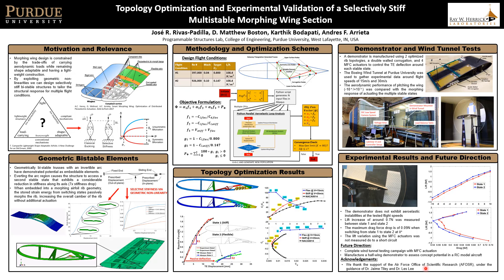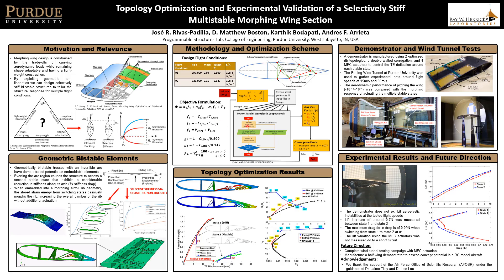This morphing rib topology may be used in the construction of a morphing wing with multiple stable states and capability to discretely change the global stiffness of the wing depending on the flight maneuver. In this work, we have considered two distinct flight conditions based on current UAV design trends to create a topology optimization scheme that yields an optimal compliant rib and optimal location for the bistable elements. A genetic algorithm was selected as the optimization algorithm, while a Delaunay triangulation algorithm was used to generate the internal truss topology.